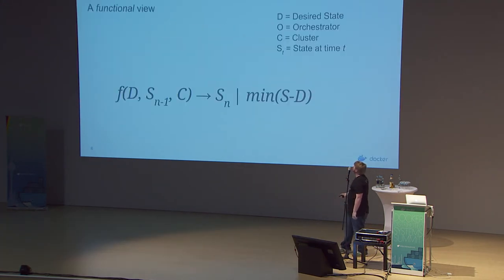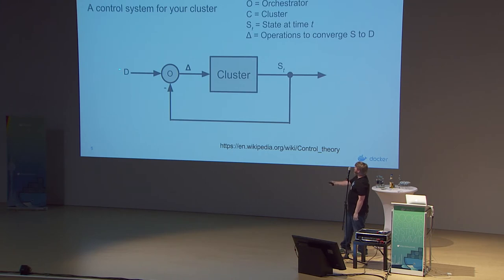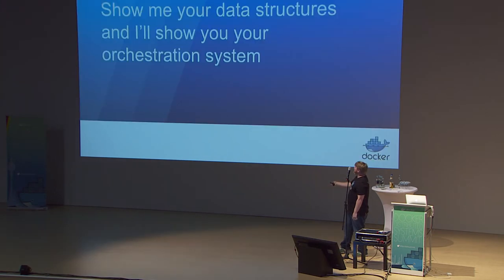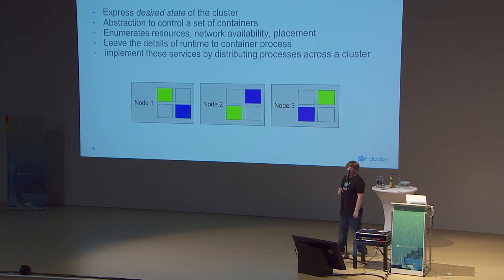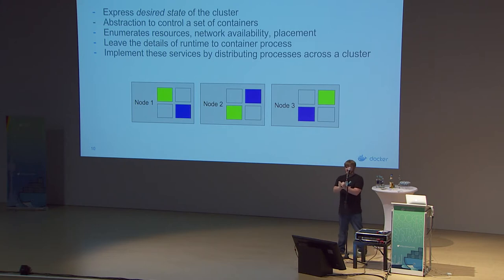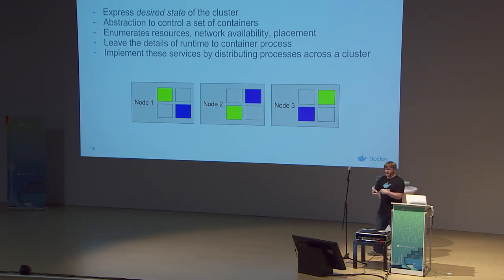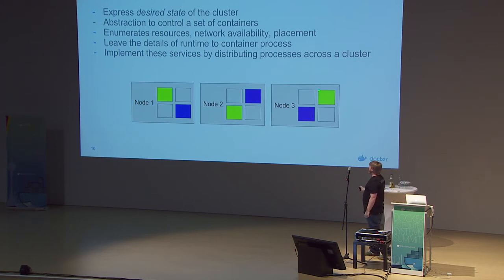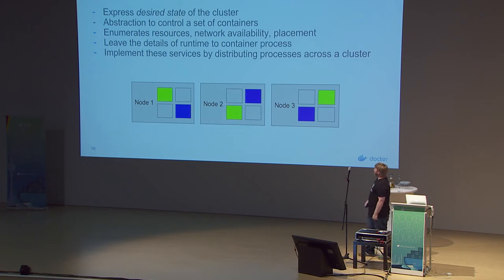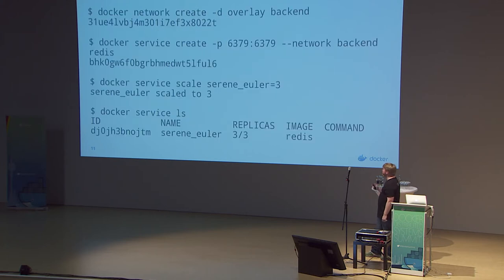Going back to the control systems slide, the input D is what we call the service, and the orchestrator component ensures that service is doing what is desired. An active controller ensures you can get to your desired cluster state. You have a green service running across three nodes and a blue service across a few nodes — that's the declaration you're making.